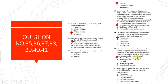Question 41: Which type of epithelium lines the ducts of sweat glands and large ducts of exocrine glands? The answer is stratified cuboidal epithelium, which lines the ducts of sweat glands and large ducts of exocrine glands.